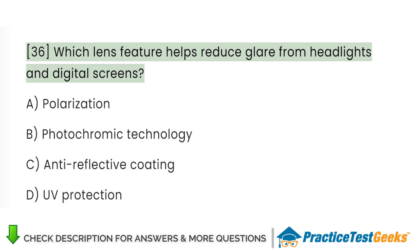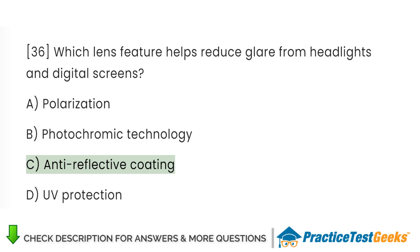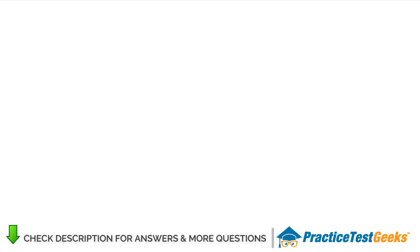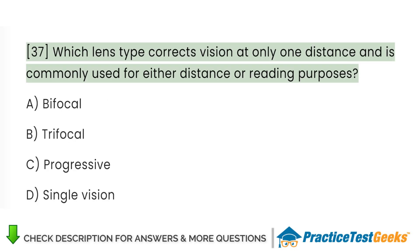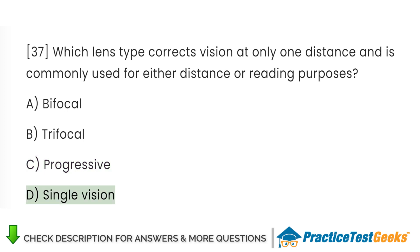Which lens feature helps reduce glare from headlights and digital screens? Which lens type corrects vision at only one distance and is commonly used for either distance or reading purposes? A. Bifocal. B. Trifocal. C. Progressive. D. Single vision.